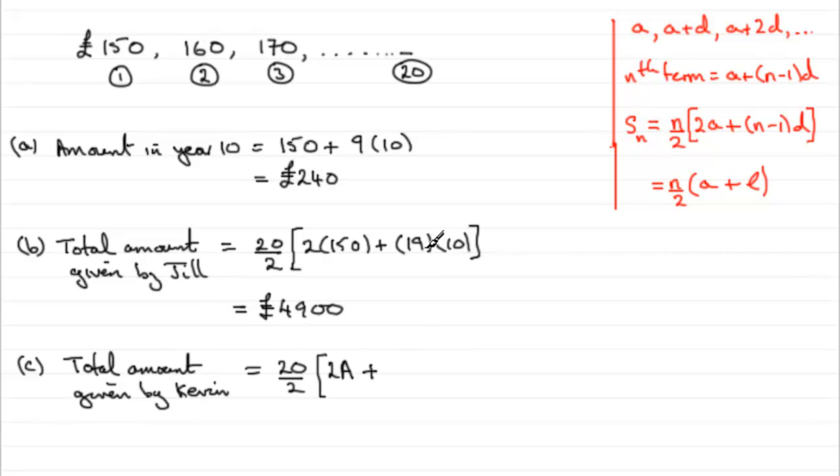He invested it, though, or gave it to charity, I should say, for 20 years. So, that's going to be 20 minus 1, n minus 1, which is going to be 19. But, instead of putting 10 pounds in each time, he put 30 pounds in. So, the common difference is going to be 30.